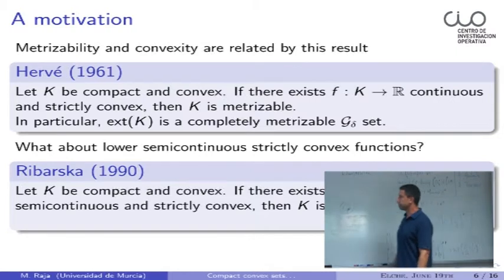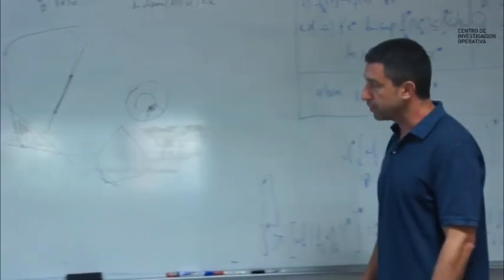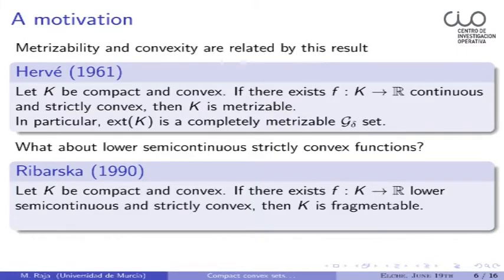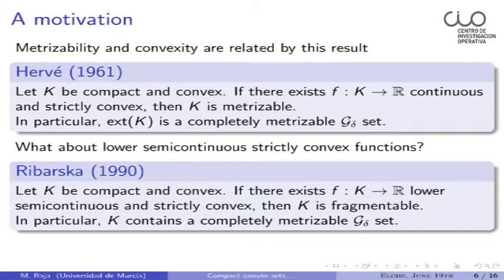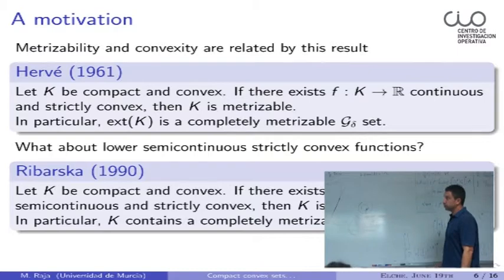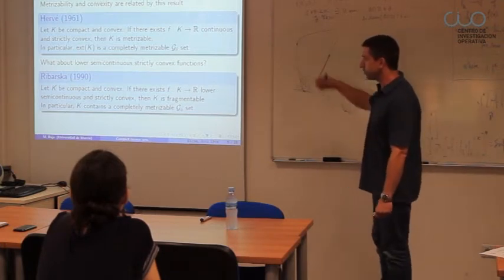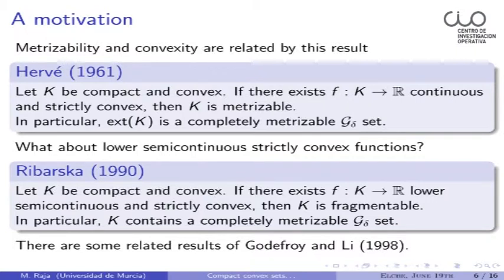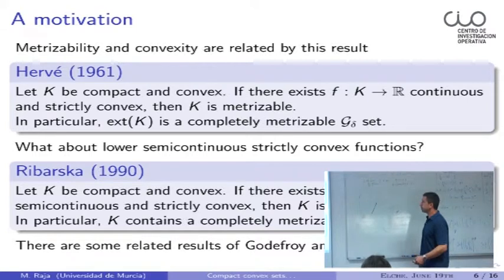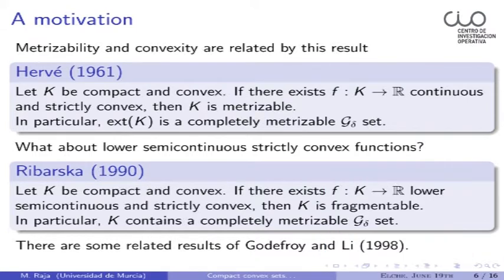So what happens if the function is not continuous, just lower semi-continuous, which is the usual case in my area? There is a result of Rybarska concerning fragmentability, which says that if you have a lower semi-continuous strictly convex function, at least you can say the compact is fragmentable by some metric. In particular, by the research around fragmentability, K contains a completely metrizable G-delta set. So there is some parallelism between both corollaries, but not complete. There are also some results of Godefroy and Lee from a few years ago, and I can give you the references later.